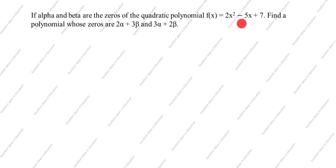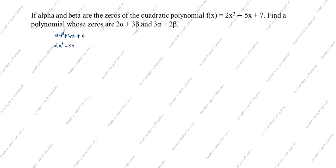The first quadratic polynomial is given as 2x² - 5x + 7, and the zeros of this quadratic polynomial are alpha and beta. We need to find the zeros of a new quadratic polynomial: 2α + 3β and 3α + 2β. For the formula ax² + bx + c, from the given polynomial 2x² - 5x + 7, we have a = 2, b = -5, c = 7.